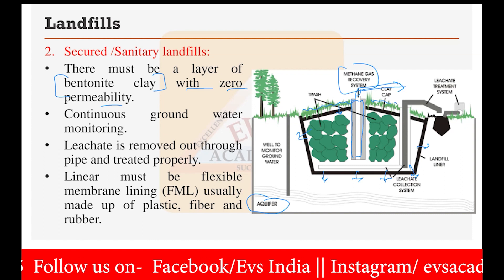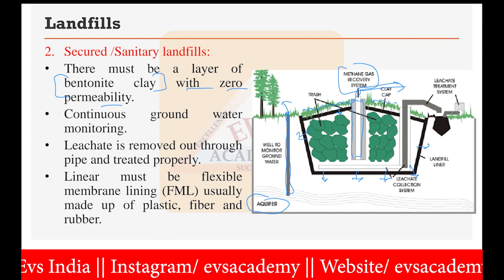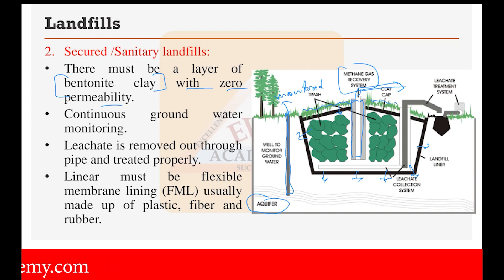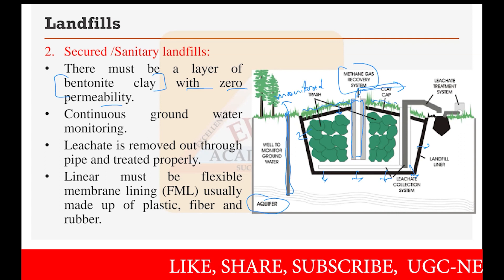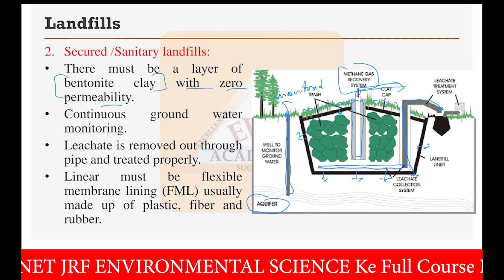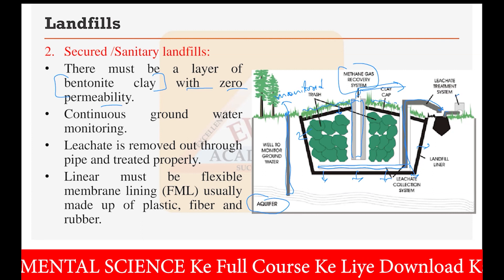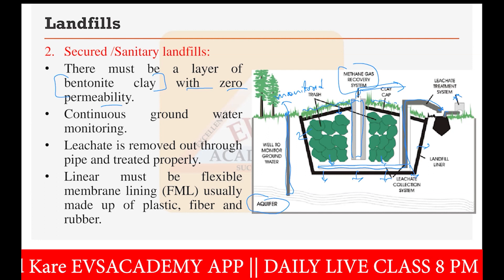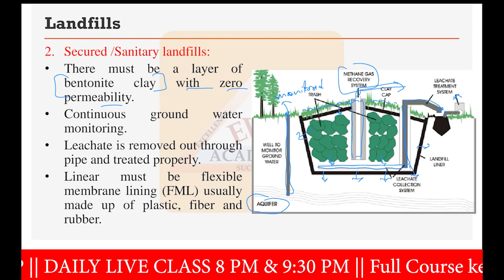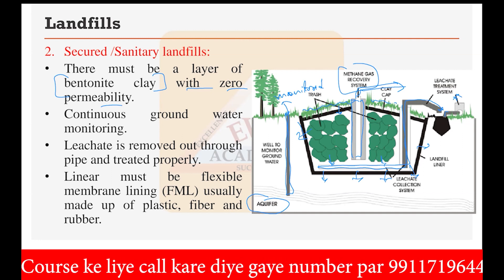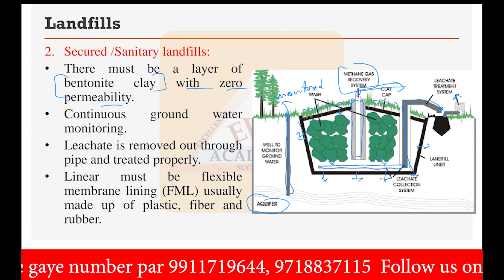A tube well is installed and continuously monitored to ensure no contaminants mix into the groundwater. If any contamination is detected, the landfill must be immediately relocated. Another pipeline removes leachate periodically, which is then decomposed or treated at an on-site treatment facility. The liner provided must be a flexible membrane liner (FML), usually made of plastic fiber and rubber material.